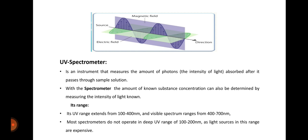UV spectrometer is an instrument that measures the amount of photons, the intensity of light absorbed after it passes through sample solution. With the spectrometer, the amount of known substance concentration can also be determined by measuring the intensity of light.